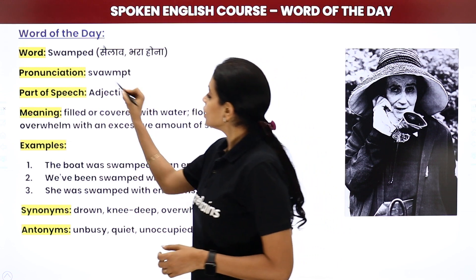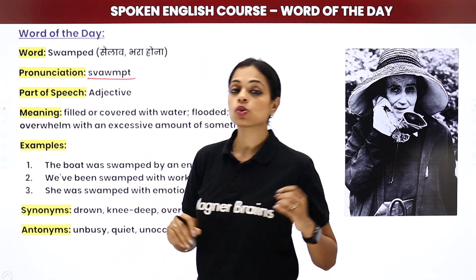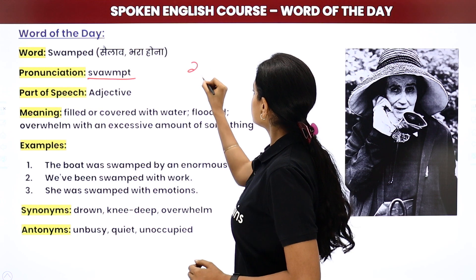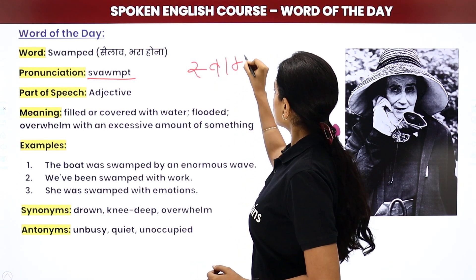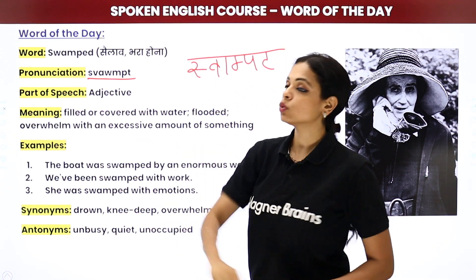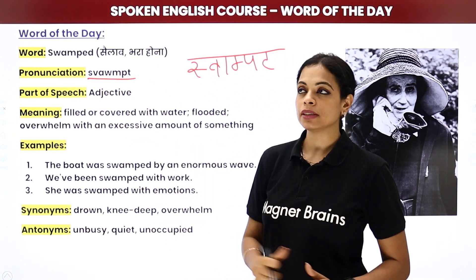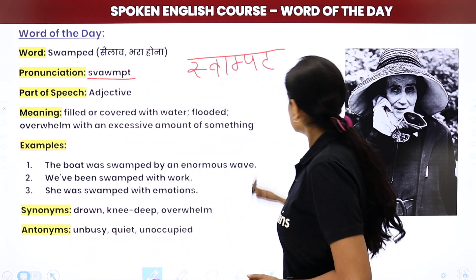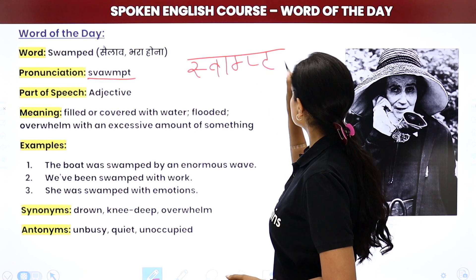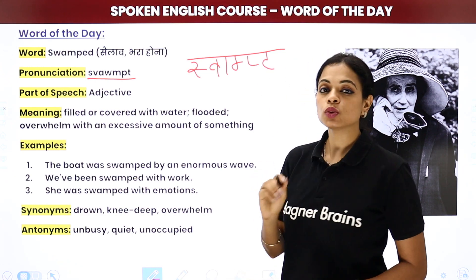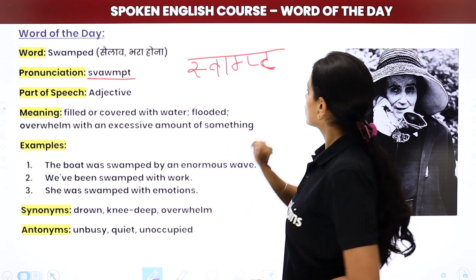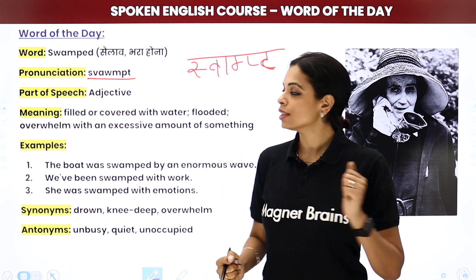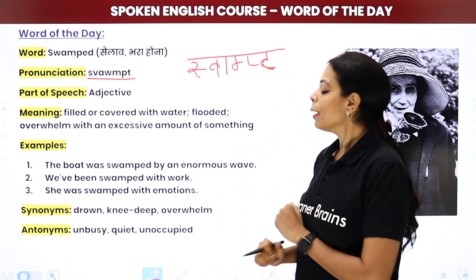Ab iska jo pronunciation hai, can you see it here? It's not 'swamped' with a hard ending — it is swamped. Swamped. So apan isko aadha per kar dete hai. Swamped — say it, swamped. Good.